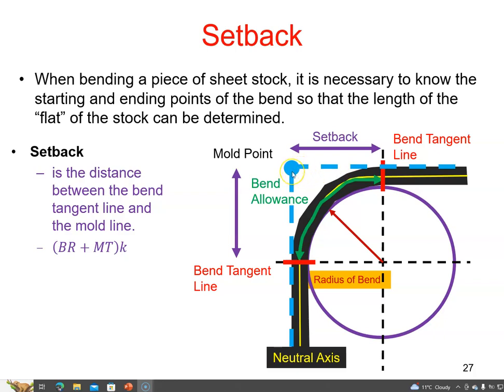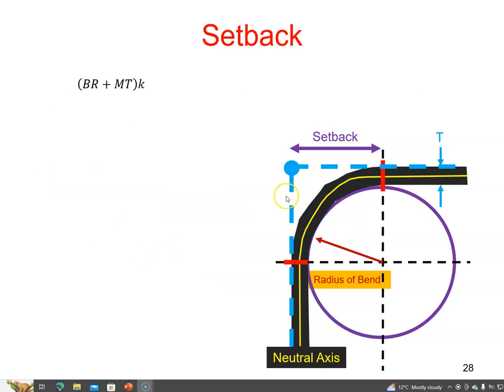The setback is the distance from the bend tangent line, which marks the start of the bend, to the mold point. Textbooks will tell you that equals the bend radius plus the material thickness multiplied by a K factor. So if we look at this bend...